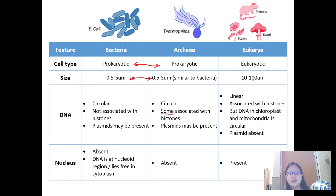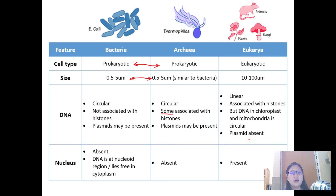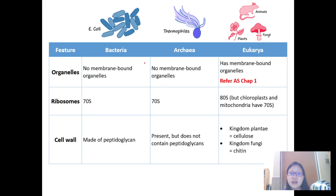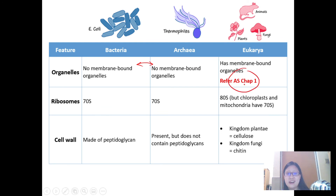With Eukarya it's completely different: it has linear DNA with histones. An exception is that DNA in chloroplasts and mitochondria is circular, but we don't consider those plasmids — plasmids are absent in Eukarya. Nucleus is present. For organelles, Bacteria and Archaea have no membrane-bound organelles, while Eukaryotes have many membrane-bound organelles. For a full list and functions, refer to chapter one.